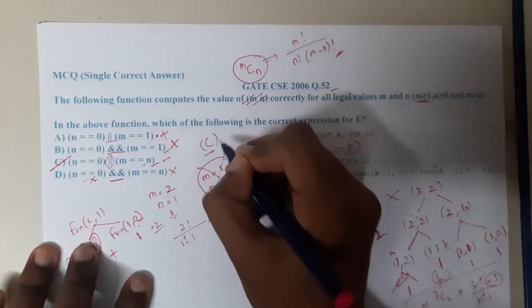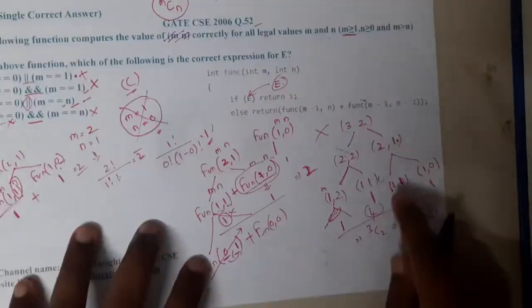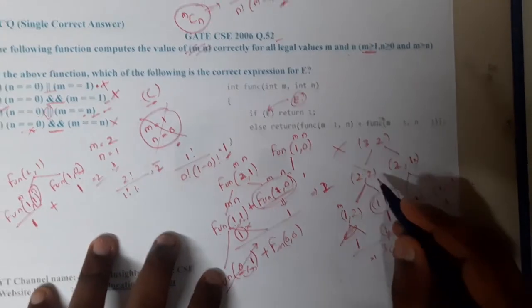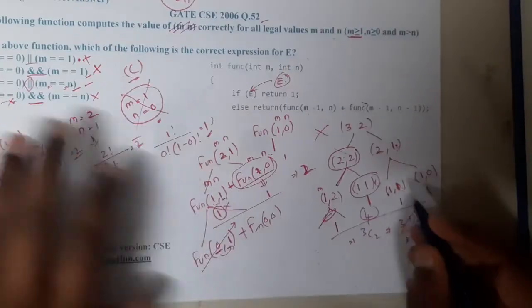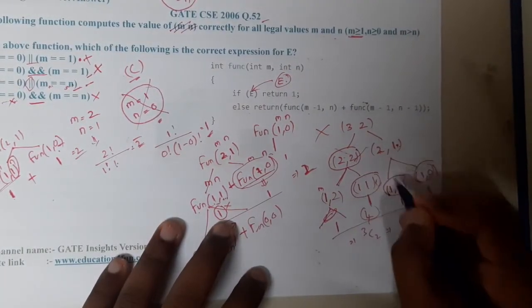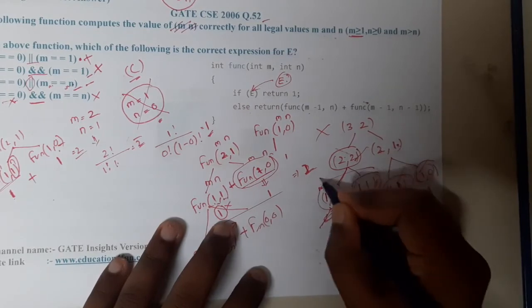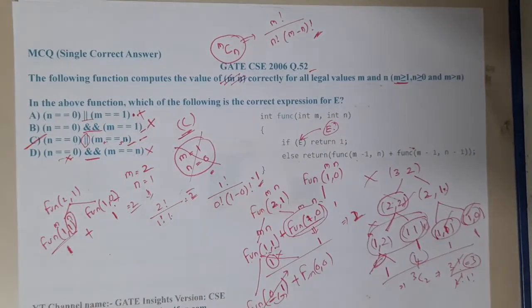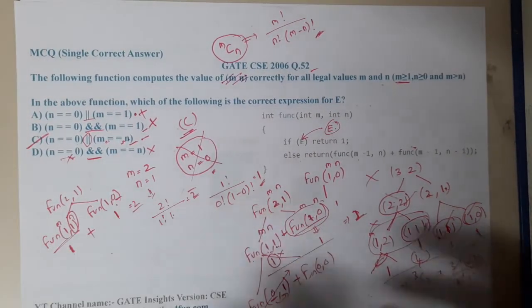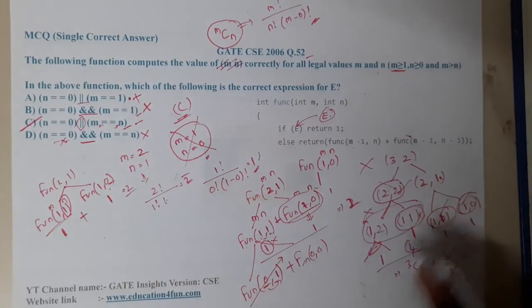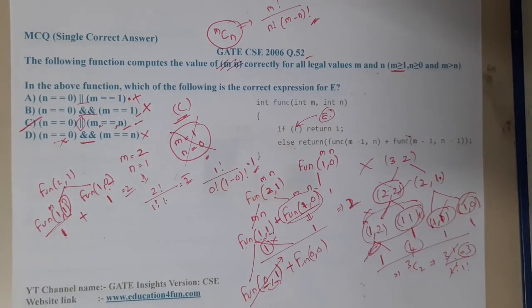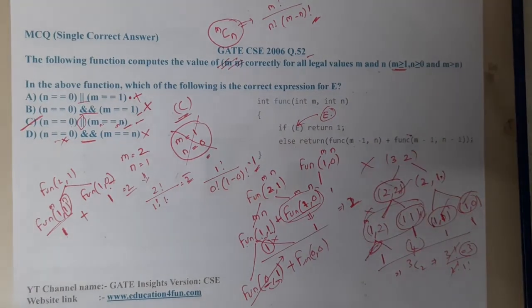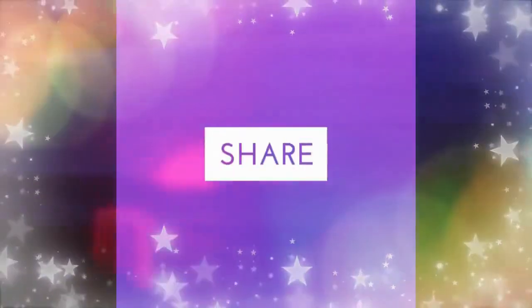Option C is correct. In option C, the m == n condition stops the recursion early — when m equals n, it returns 1 immediately, so the extra division does not happen. The totals add up to 3 correctly for func(3, 2). So option C is the correct answer. You need to do some trial and error for these questions. In the next lecture we will continue with the next question — thank you, like, share and subscribe.